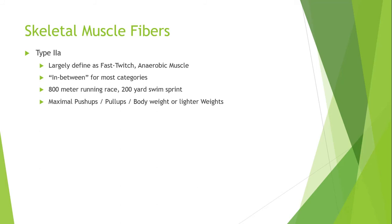There is also Type 2A muscle fiber, largely defined as fast twitch anaerobic muscle fiber. This is your 800-meter running race, your 200-yard swim sprint. This is where you do as many push-ups or pull-ups as you possibly can — bodyweight exercises, lighter weights where you're pushing and your muscles are burning. That's your Type 2A muscle fiber at work.